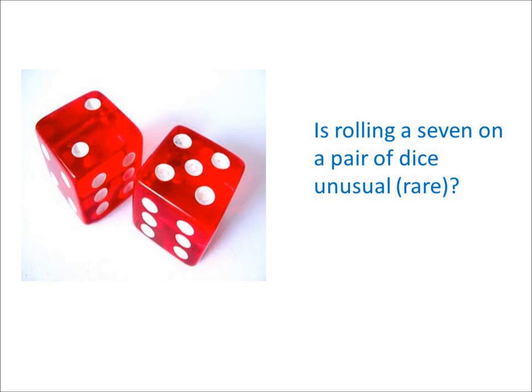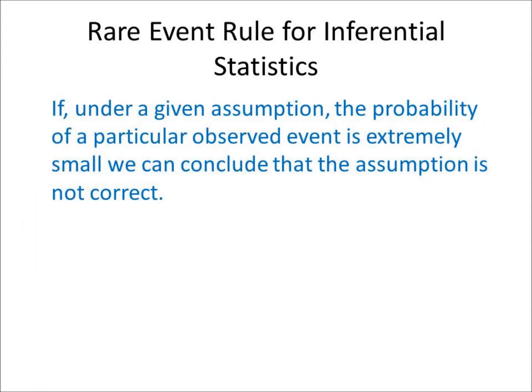What if you rolled the dice twice? Or three times? Or four times? Is it rare or unusual to get all 7s? There is a statistical rule to determine if an event is rare. It's called the rare event rule for inferential statistics.